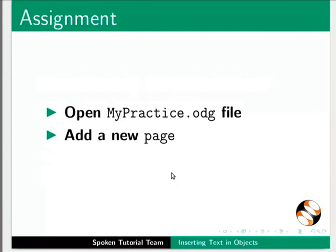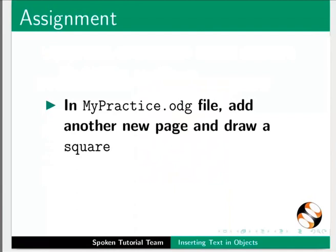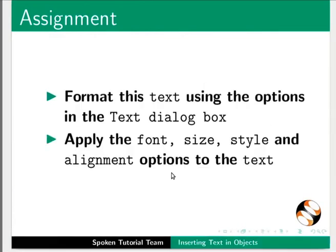Try out this assignment by yourself: open mypractice.odg file, add a new page, and create a notebook label and an invitation as shown in the slide. Here is another assignment: in mypractice.odg file, add another new page and draw a square. Insert the following text: 'A square has 4 equal sides and 4 equal angles. Each angle in a square is 90 degrees. The square is a quadrilateral.' Format this text using the options in the text dialog box, and apply the font, size, style, and alignment options to the text.